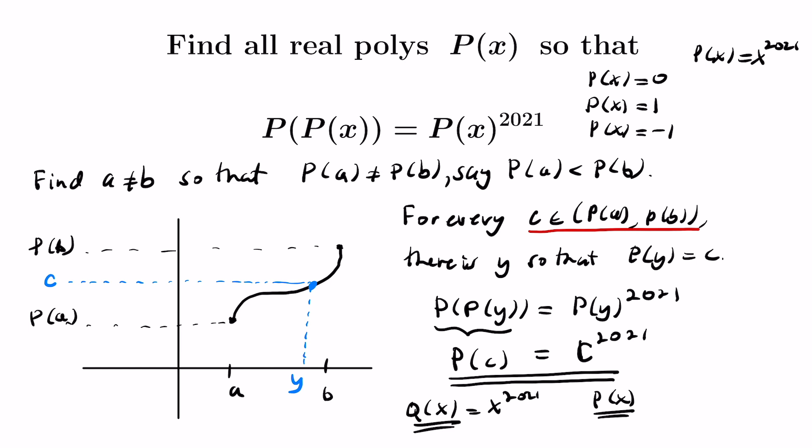What's remarkable about this is that it's the only non-constant polynomial that satisfies this. And we can actually plug it right in to this expression to verify that that actually will be the case. Both of the two sides that we have will be x raised to the 2021 squared. So a cool problem that uses different parts of math: one, understanding that polynomials can only have finitely many roots, and another, the intermediate value theorem.